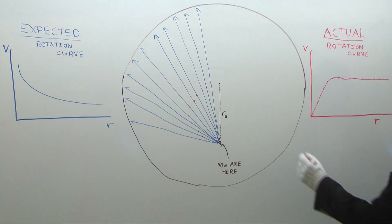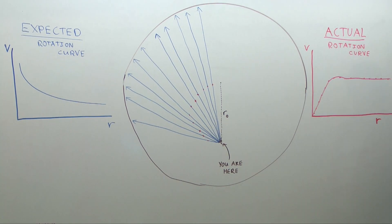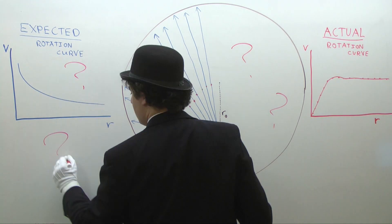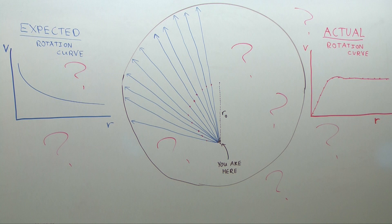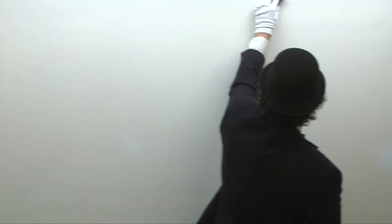Or did it? It turns out that this experiment has been repeated all over the world many times over, and every time people find this shape for the rotation curve. The rotation curve we observe doesn't match how Kepler told us it should look. Was Kepler wrong? Not quite.